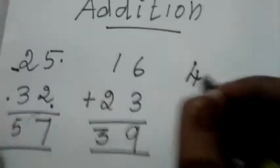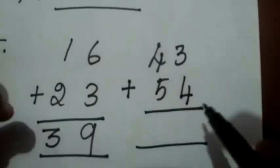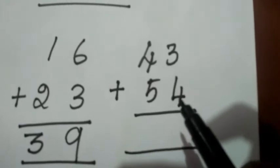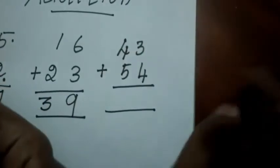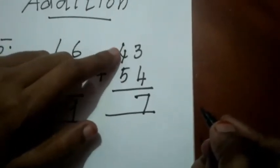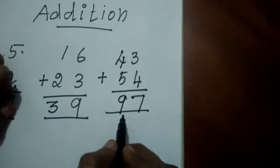Next sum is 43 plus 54. You have to add the first-digit numbers: 3 and 4. 3 in your mind and 4 on your finger. 3 after: 4, 5, 6, 7. Answer is 7. Then the second-digit numbers are 4 and 5. 4 in your mind and 5 on your finger. 4 after: 5, 6, 7, 8, 9. Total answer is 97.